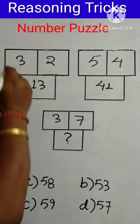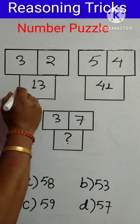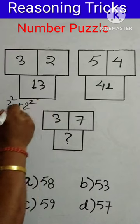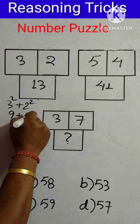We'll consider this one and try to figure out how 13 is derived. See here, if we do 3 squared and 2 squared: 3 squared is 9, 2 squared is 4. 9 plus 4 equals 13, which is the given number.